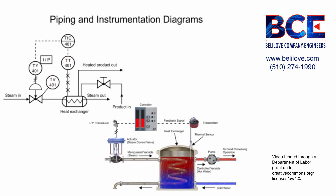The instrument connected to the heat exchanger contains two other types of information. The second letter in the functional identifier indicates it is a transmitter, and the balloon with no line inside its symbol indicates the device is field mounted.